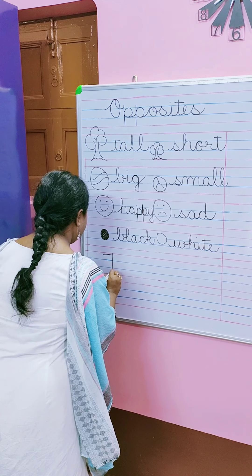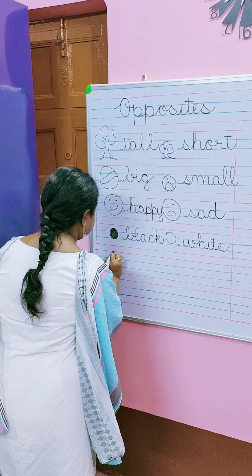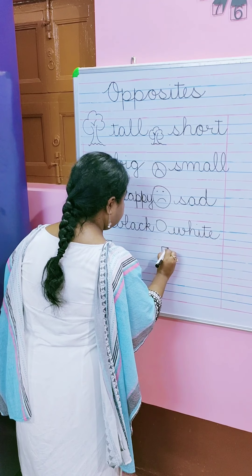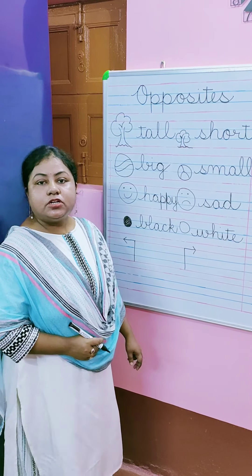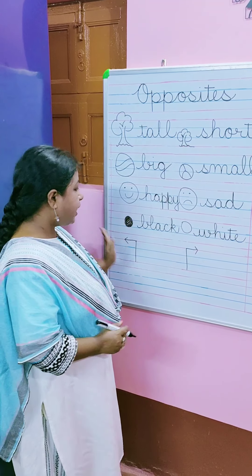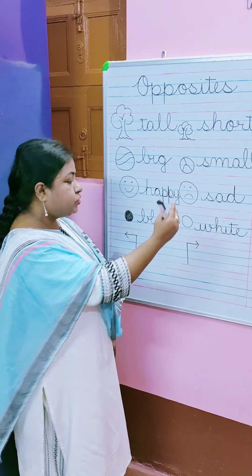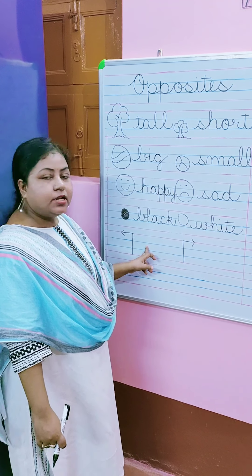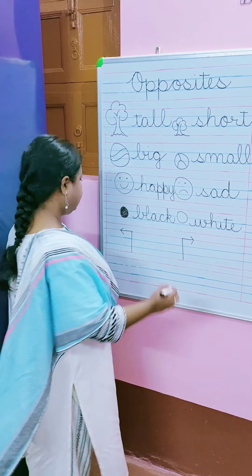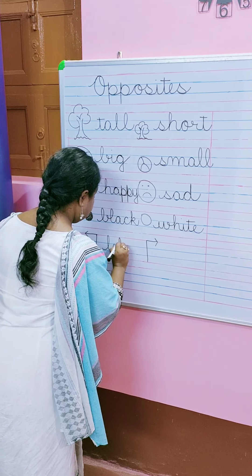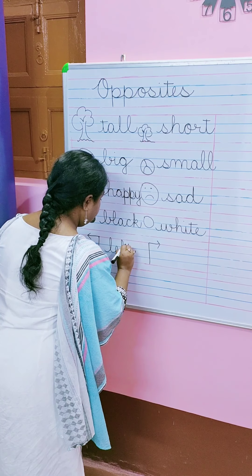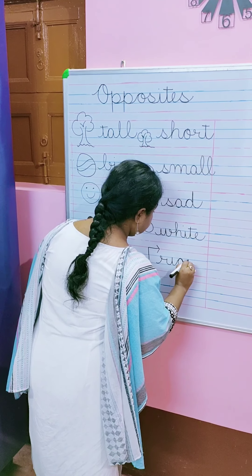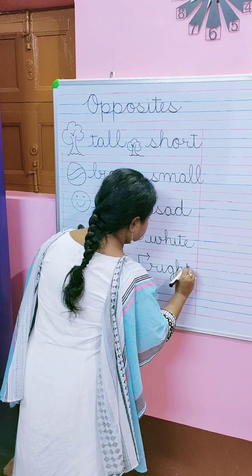Now I will draw an arrow. You can see, children, this arrow is facing this side and this arrow is facing this side. So this side is right hand side and this side is left hand side. So we will write here left and right.